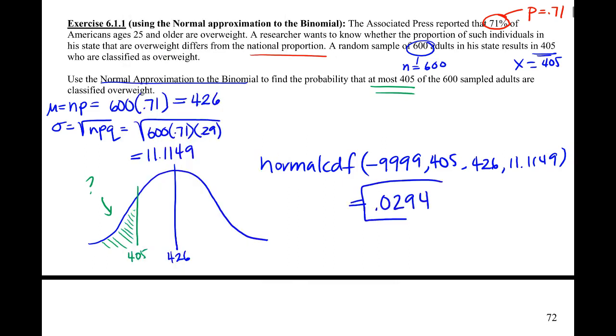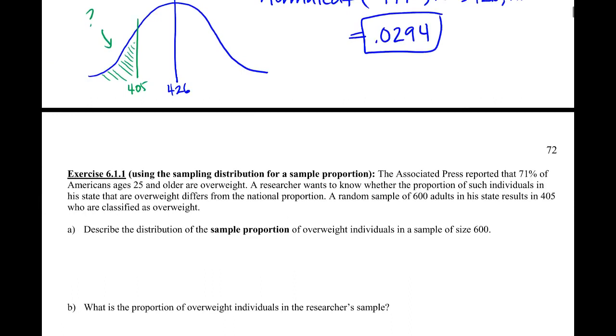That's our probability. So there's about a 2.9% chance that we end up in this little section of getting 405 or less people in our sample. So that was a review of what we've done before. The only reason I did it is to show you that what we're doing now is pretty much identical.